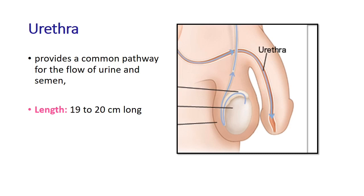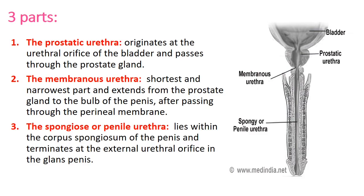The urethra provides a common pathway for the flow of urine and semen, and is approximately 19 to 20 cm long. It has three parts: the prostatic urethra (near the prostate), the membranous urethra, and the spongy or penile urethra.